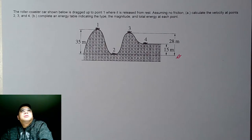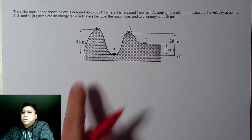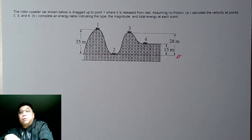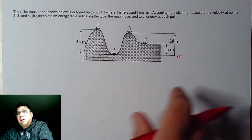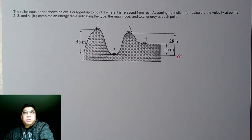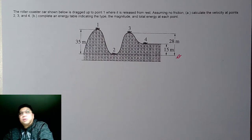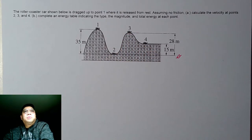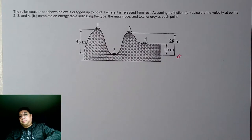The problem shows a roller coaster car dragged up to point one, where it is released and allowed to coast along the track. Making the assumption that there's no friction — frictional losses are considered negligible — we need to calculate the velocity at points two, three, and four, and then complete an energy table indicating the type, magnitude, and total energy at each point.